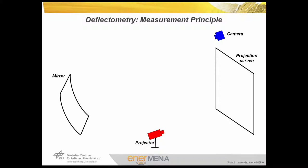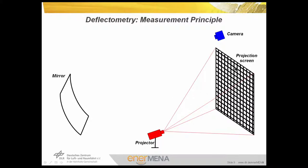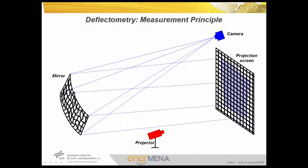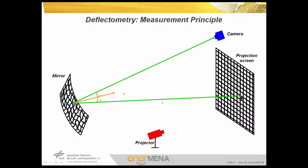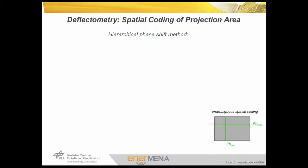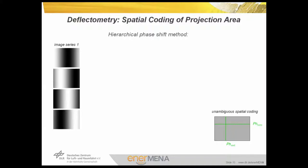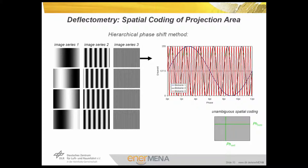Next we will have a look at the measurement principle of deflectometry. The measurement equipment consists mainly of a camera, a projector, and a projection screen. The projector creates a pattern on the projection screen, and the camera sees the reflected pattern of the mirror, which is generally a little distorted. If we can assign to every point on the projection screen a corresponding point on the mirror and we also know the camera position, we can calculate by the law of reflection the local slope at each point and compare it to the design slope. The projector creates an image series of sinusoidal patterns with different phases and increasing frequency, allowing spatial coding both in vertical and horizontal directions.